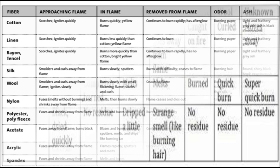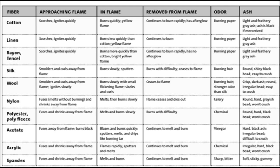Blow the flame out. Allow the fabric to cool. Press the residue between your fingers and note whether it is hard or powdery. Describe the ash quality that remains. On the basis of these observations, try to identify the properties of wool, silk and synthetic fibers.